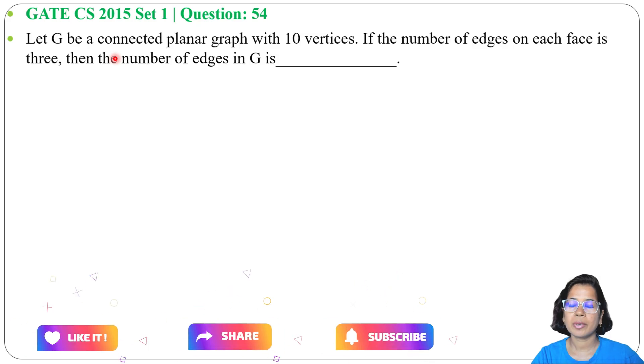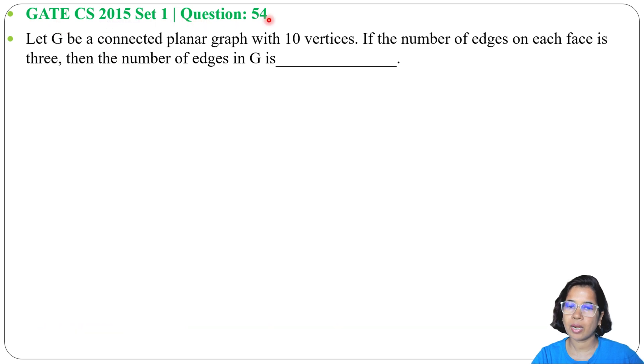Let's solve one previous question of graph theory. This question was asked in GATE year 2015 set 1, question number 54. Let G be a connected planar graph with 10 vertices. If the number of edges on each face is 3, then the number of edges in G is?